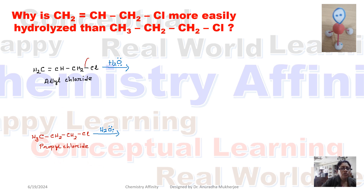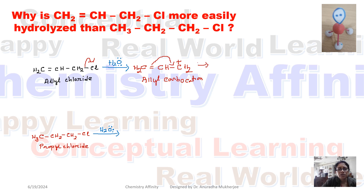For allyl chloride, the carbon-chlorine bond breaks first, giving an allyl carbocation. The allyl carbocation is a primary carbocation, but it is still stable because it undergoes resonance. Since it undergoes resonance, it is a stable carbocation and the reaction proceeds via an SN1 mechanism.